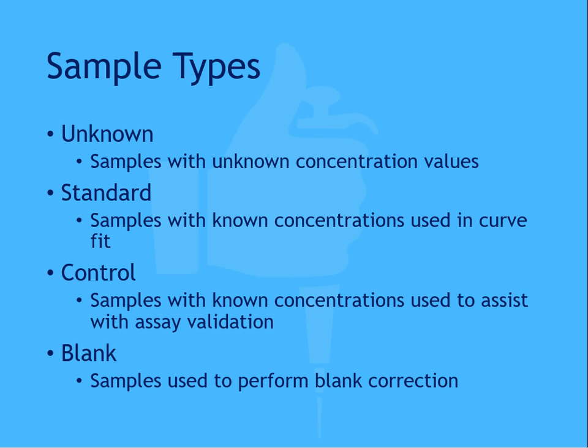Blank samples allow you to determine the background absorbance and are usually used in a blank correction step, in which the raw values of the blank samples are subtracted from the rest of the samples on the assay. These samples don't receive sample or detector antibodies, and help control for any variation or contribution of the plate or tube itself to the measured optical density.